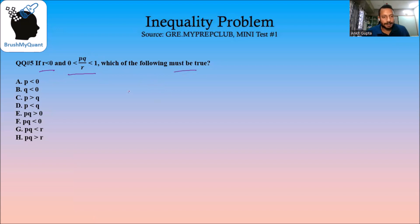So let's try and simplify this expression. pq by r is greater than 0 and less than 1. If we take this half, we can rewrite this as pq by r is greater than 0. Since r is a negative number, if we multiply r on both sides or take r to the right hand side, the sign of inequality will reverse. So we will have pq is less than 0 multiplied by r, or pq is less than 0. That means option number f is true for sure.